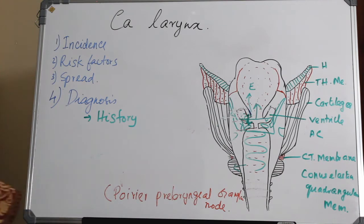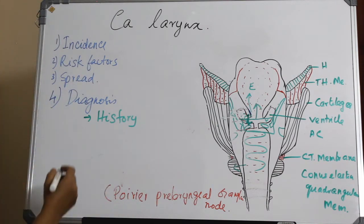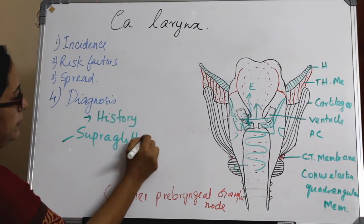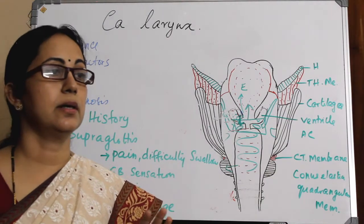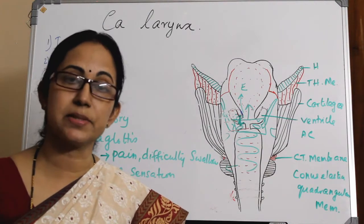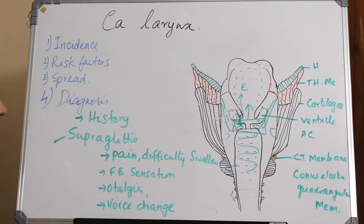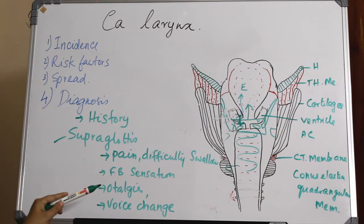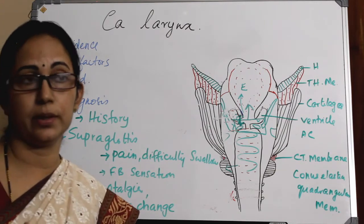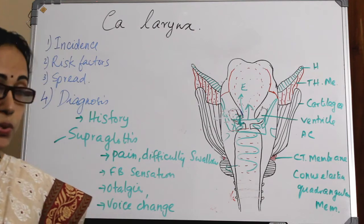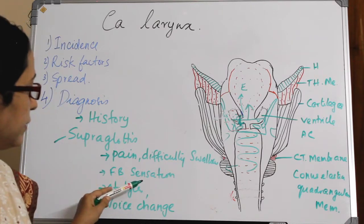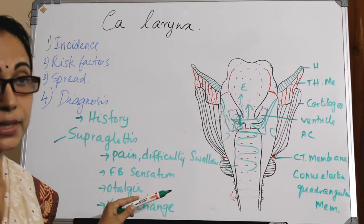We can divide the diagnosis into supraglottis, glottis, and subglottis. The supraglottis produces very little or no symptoms in the earlier stages. If the patient does complain, it will be a vague symptom like pain in the throat, difficulty in swallowing, or a foreign body sensation in the throat. Usually this is treated as GERD — gastroesophageal reflux disease or laryngeal reflux disease — and there is a chance of missing that.